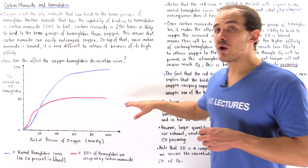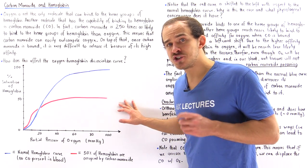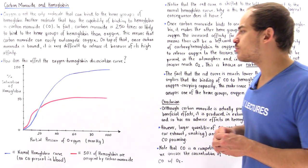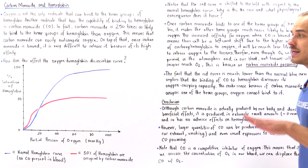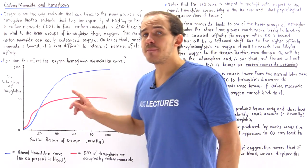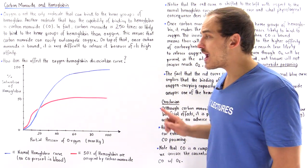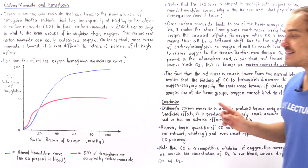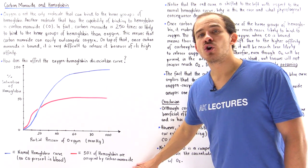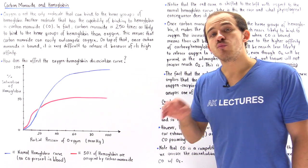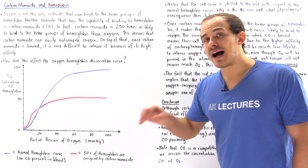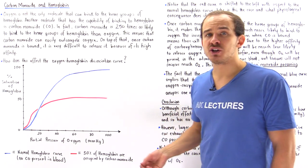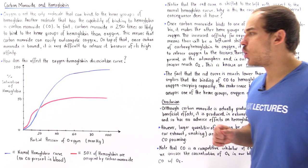On the other hand, the red curve describes a situation when we do have carbon monoxide present inside the blood plasma. In fact, it describes a particular situation where 50% of the hemoglobin is occupied by carbon monoxide. Whenever carbon monoxide binds onto hemoglobin, we call the hemoglobin carboxyhemoglobin.